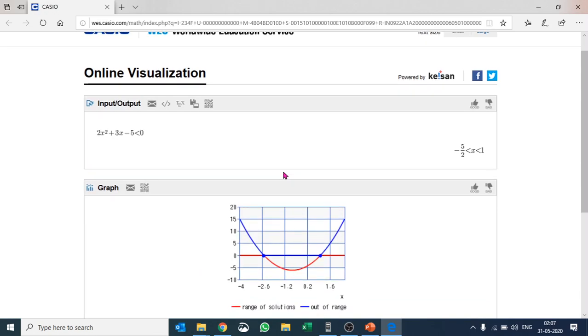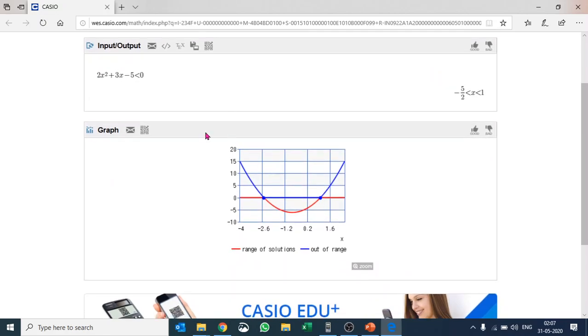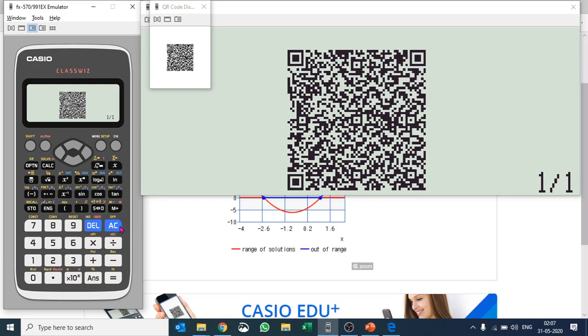If you are using the emulator, you can just generate the QR code, double-click on it, and it will take you to the graph page. You can see the graph and the range of solutions—all are below 0 because it was less than 0, and it is between -2.5 and 1, as given in our answer.